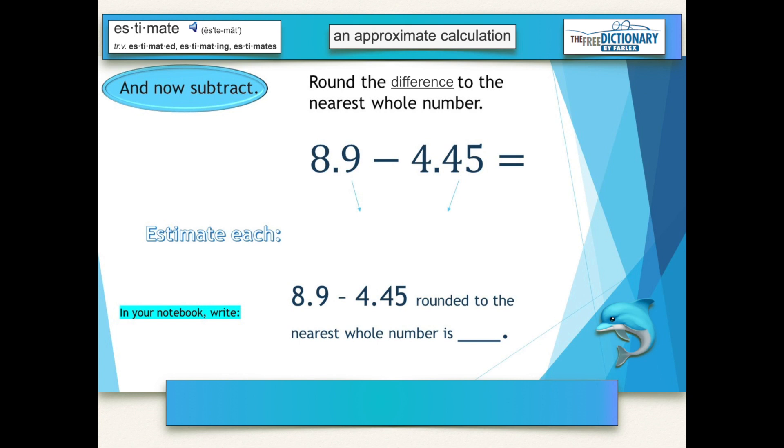This time it's a subtraction problem, so find the difference. Round the difference to the nearest whole number. Eight and nine-tenths minus four and forty-five one-hundredths.